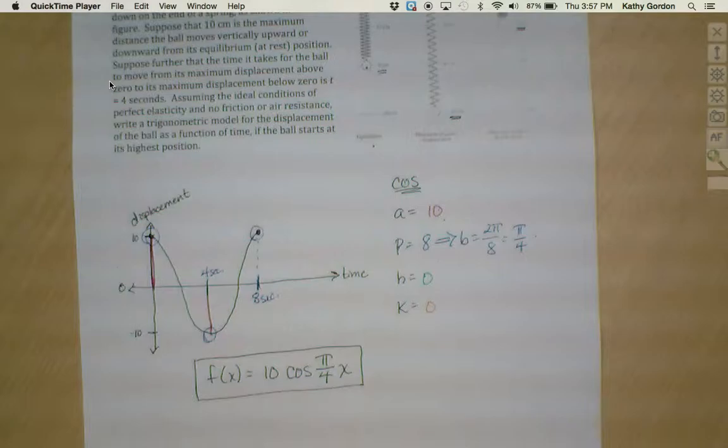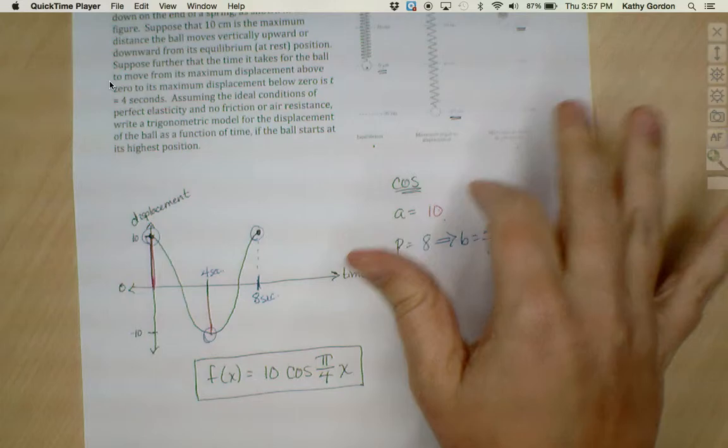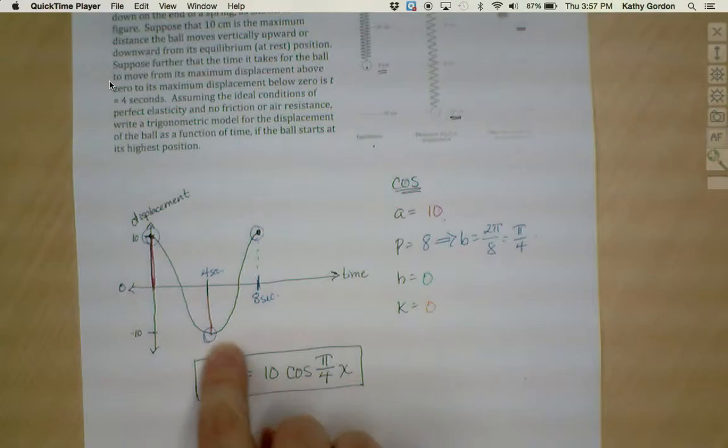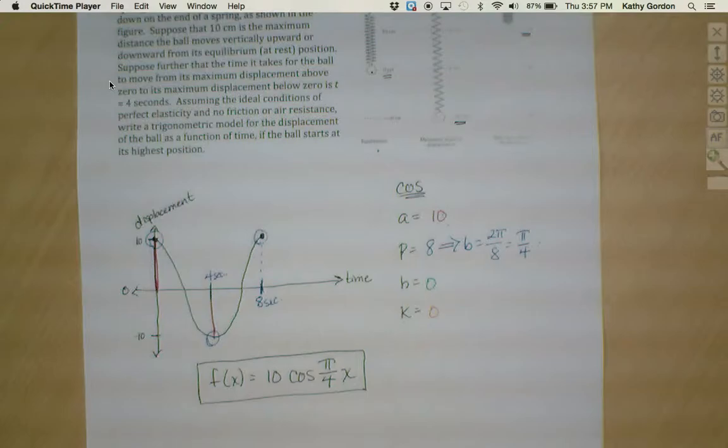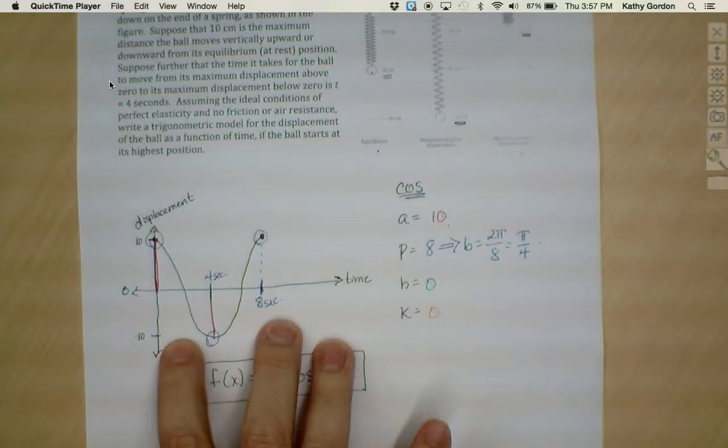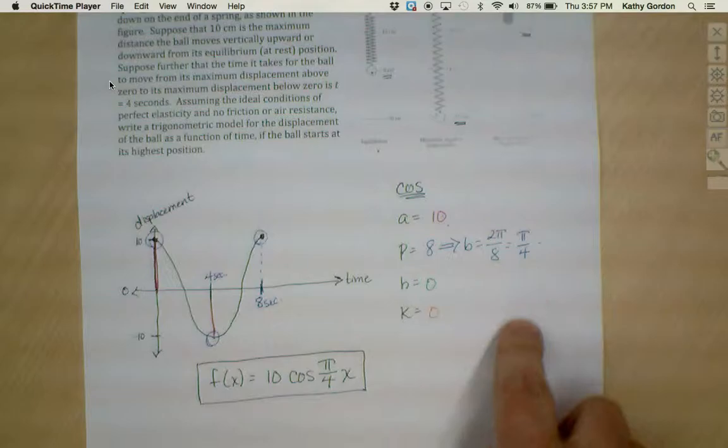Anytime you have an object that is going through a repetitive motion, whether it's up and down on a spring like this, whether it's going around in a circle like on a bicycle, that repetitive motion means that trigonometry is the best way to represent it. And so if you go through the process of drawing yourself a sketch of what's happening, and then using the information they give you to start labeling that sketch, and then from the sketch figure out your a, p, h, and k, p then giving you your b-value, you should be able to take all of that and write your function.